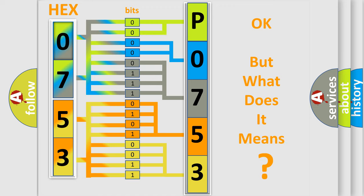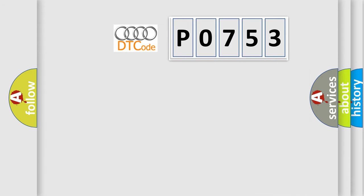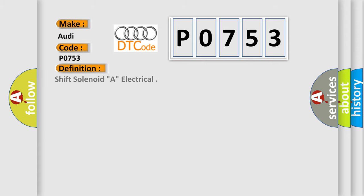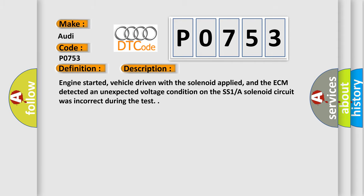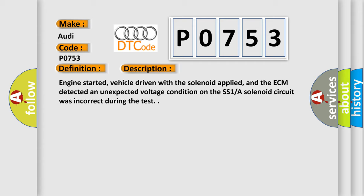A single byte conceals 256 possible combinations. We now know how the diagnostic tool translates received information into a more comprehensible format. The number itself does not make sense if we cannot assign it meaning. So, what does the diagnostic trouble code P0753 interpret specifically for Audi? The basic definition is: Shift Solenoid A, electrical. Engine started, vehicle driven with the solenoid applied.